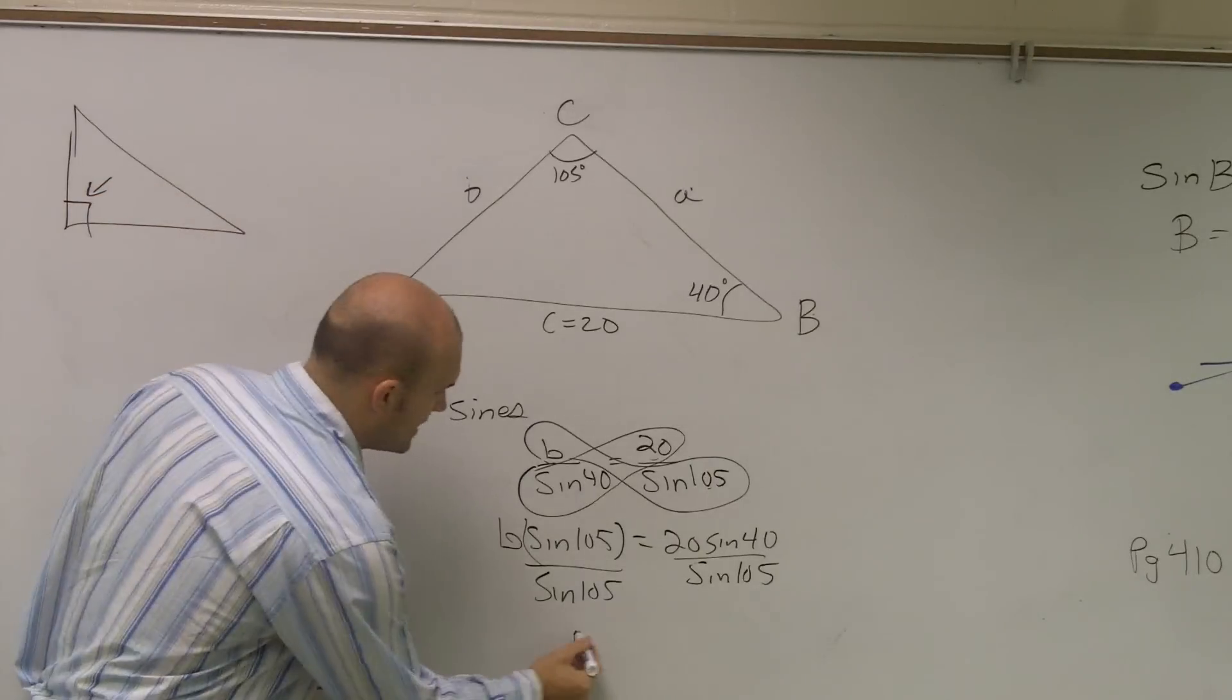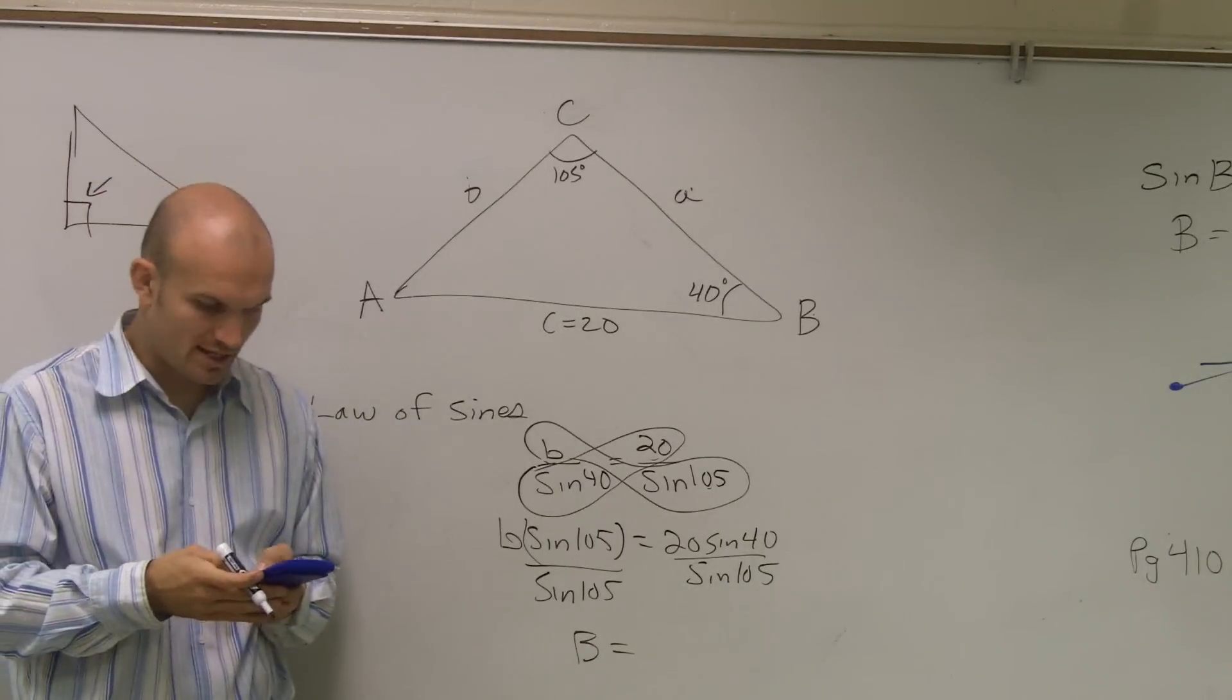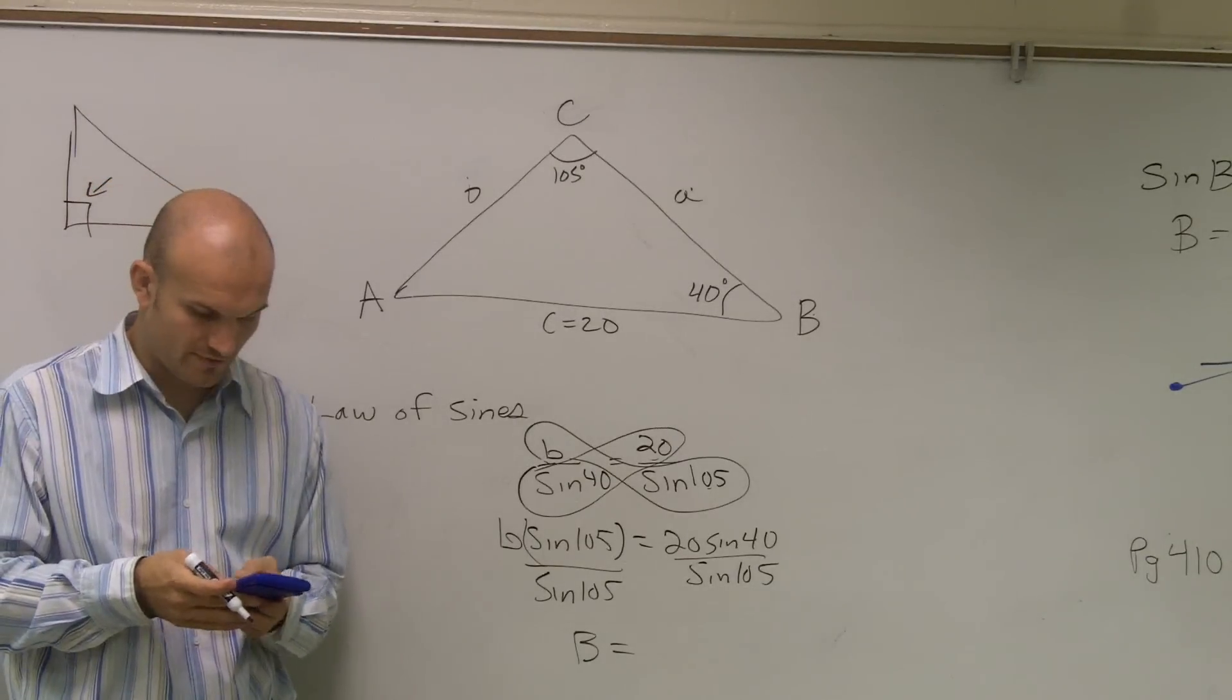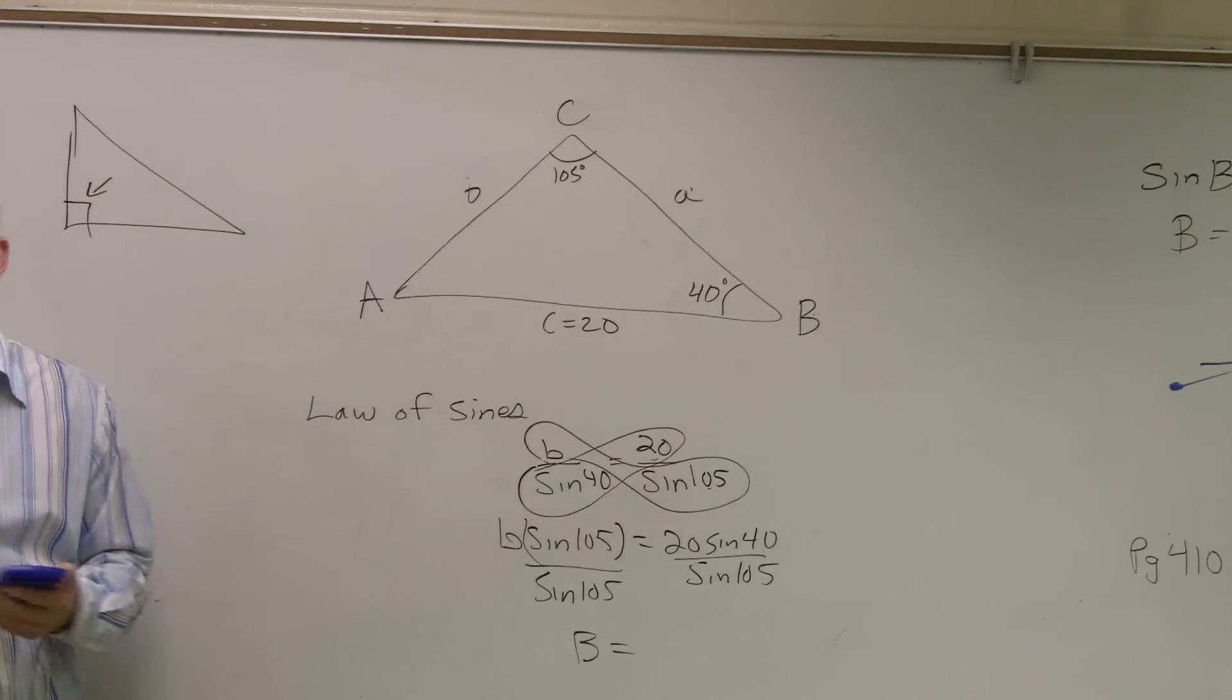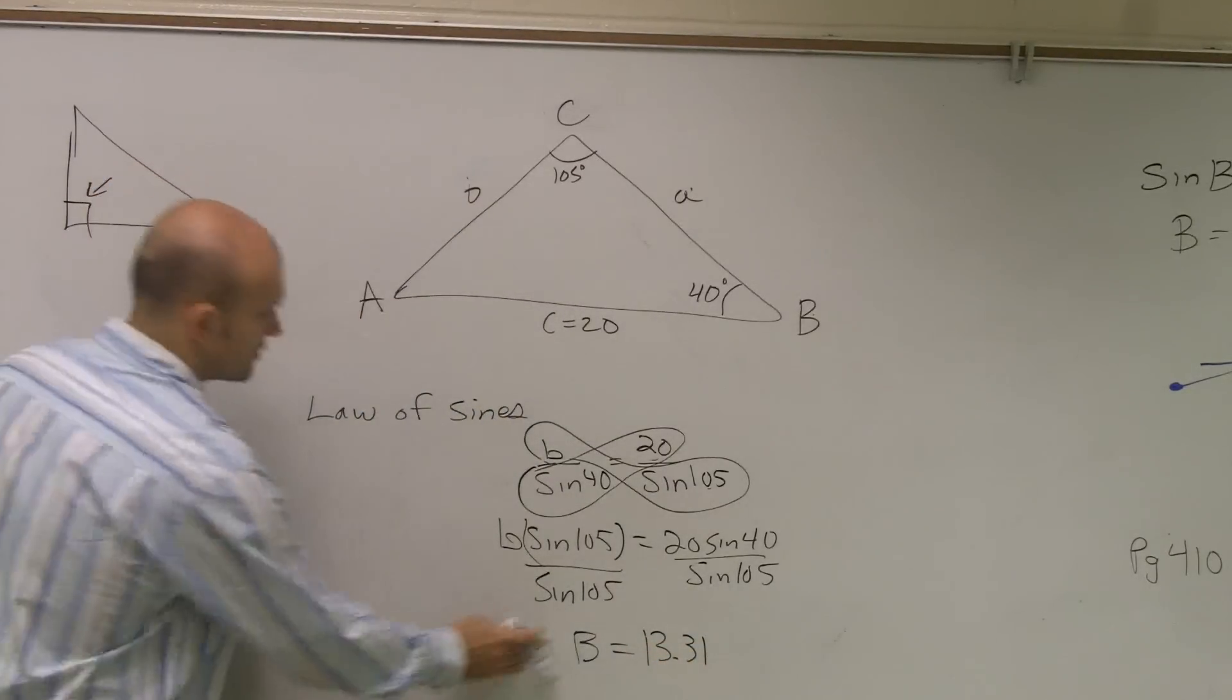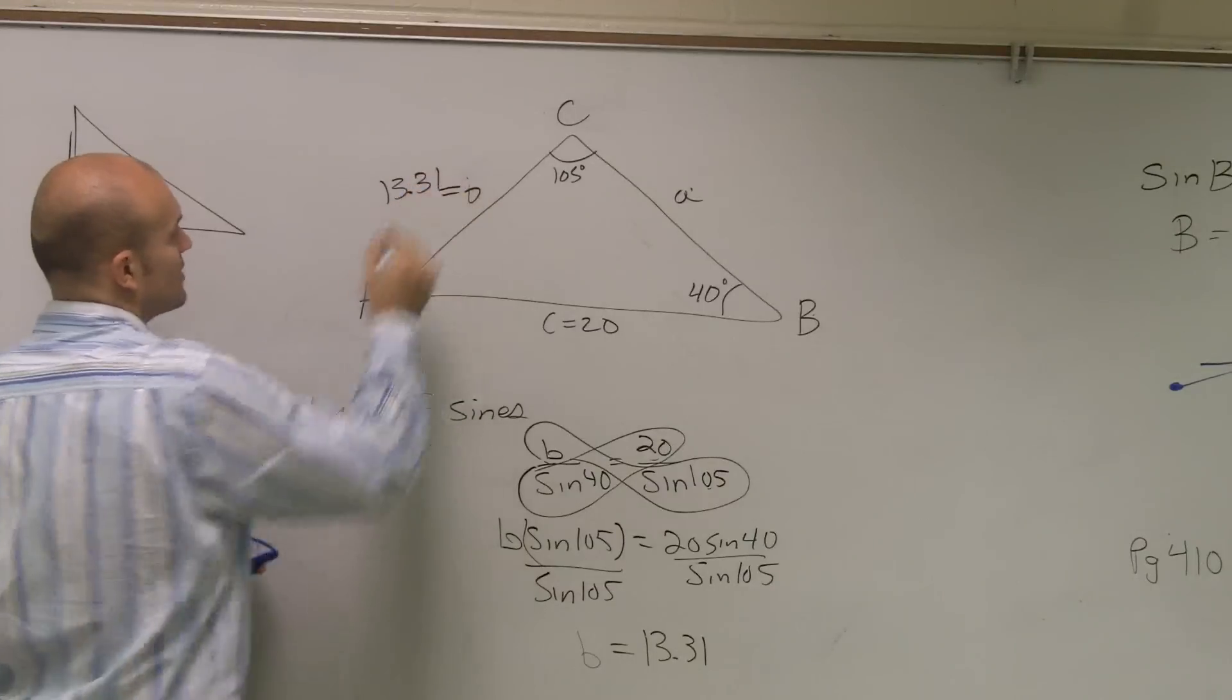So therefore, B equals... just make sure when you're plugging this in your calculator that you've closed your parentheses. So I'm going to do 20 times sine of 40, closed parentheses, divided by sine of 105. And I'm going to get 13.30. I'm going to round to the nearest hundredth for the problem, so 13.31. That's the value of B.